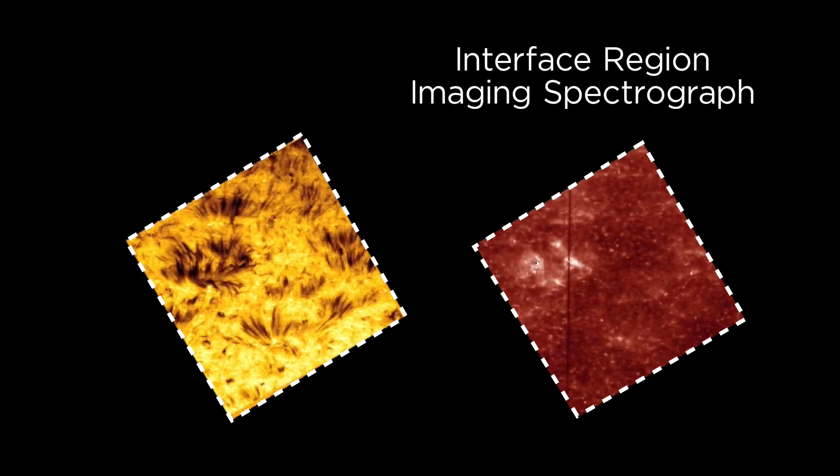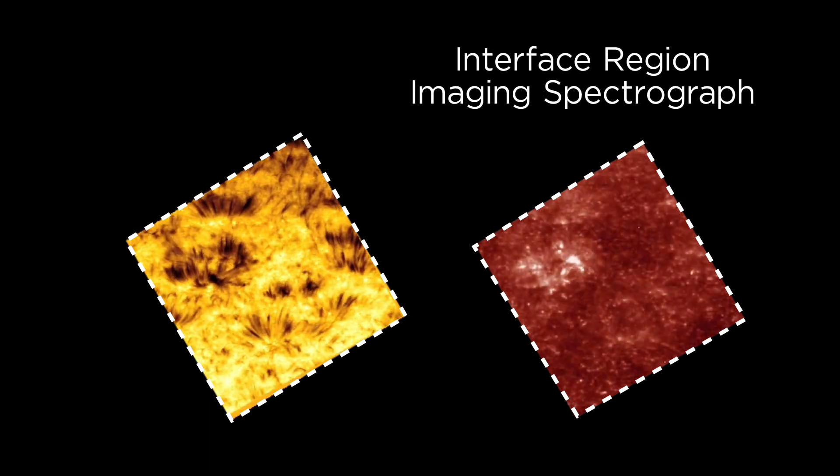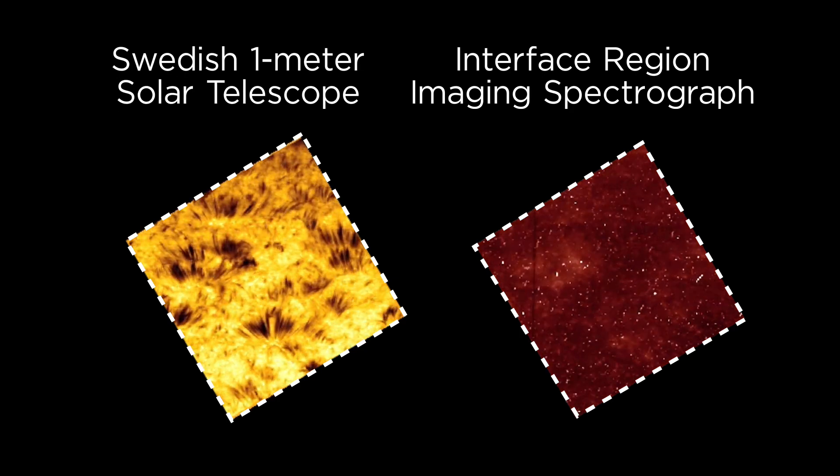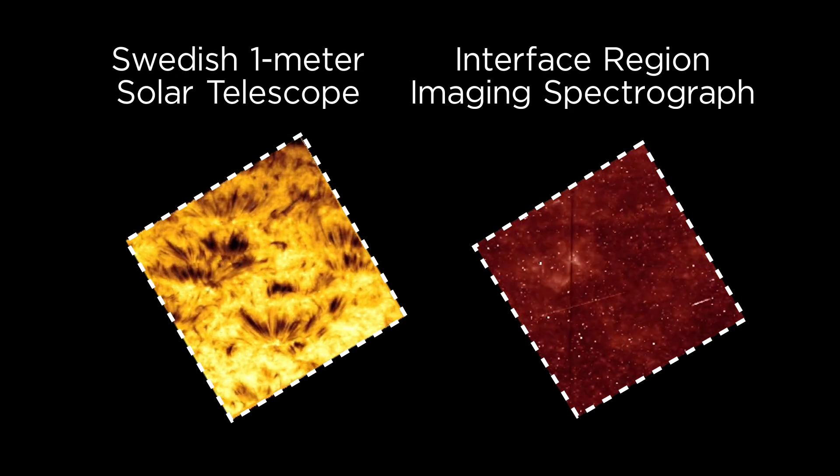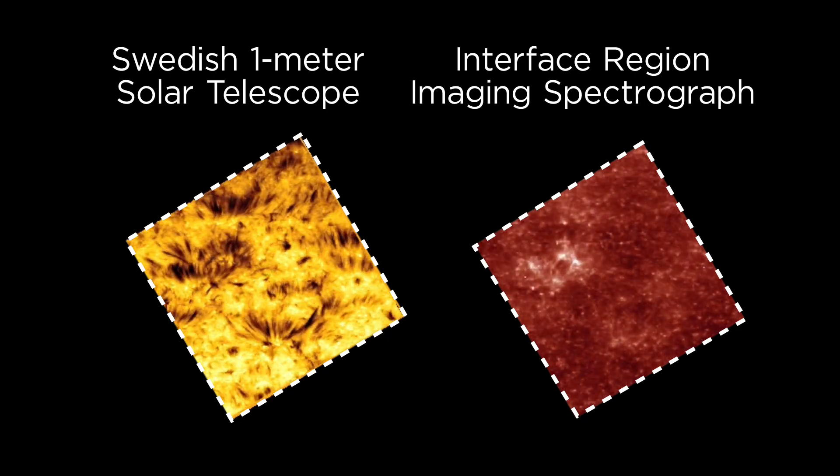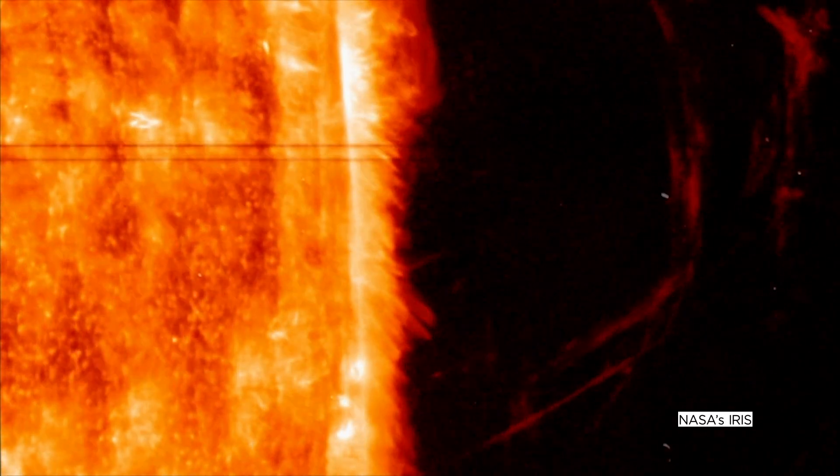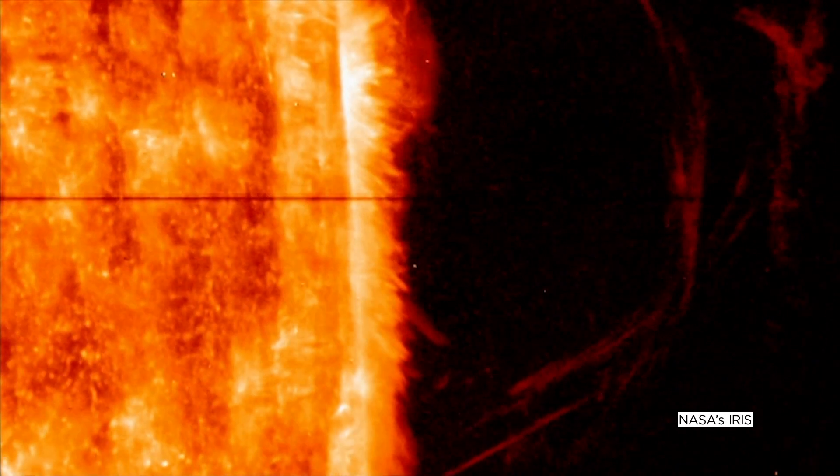Scientists compared the model simulations with observations from NASA's Interface Region Imaging Spectrograph, or IRIS, and the Swedish 1-metre Solar Telescope based in La Palma, Spain, and found they were closely matched. With an accurate model of spicules, scientists could explore their origins.